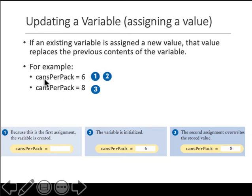So the first time when you assign cansPerPack equals 6, something like this happens inside memory. Inside memory, cansPerPack is defined as a variable and this is the memory location. Initially it's empty, when you say equals 6, it puts 6 in that memory location.